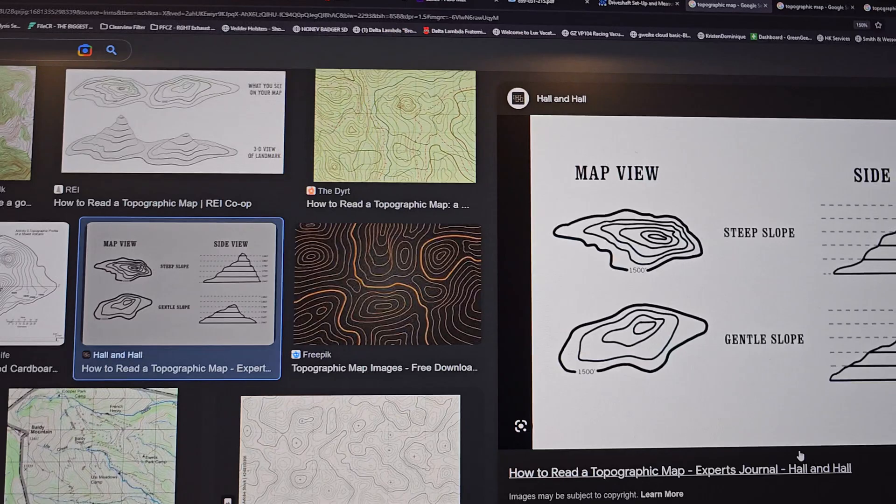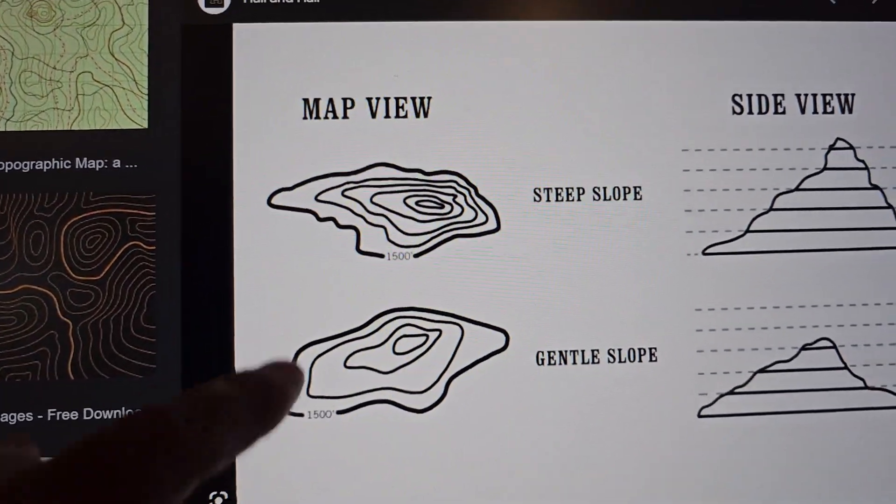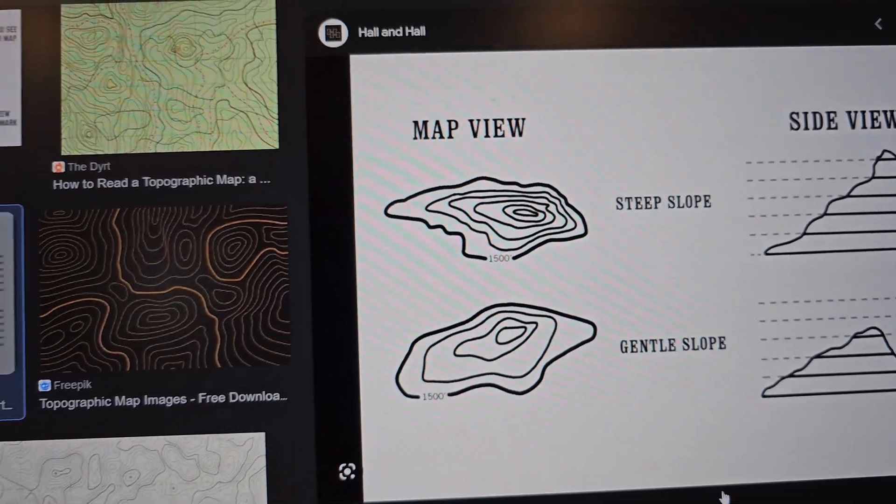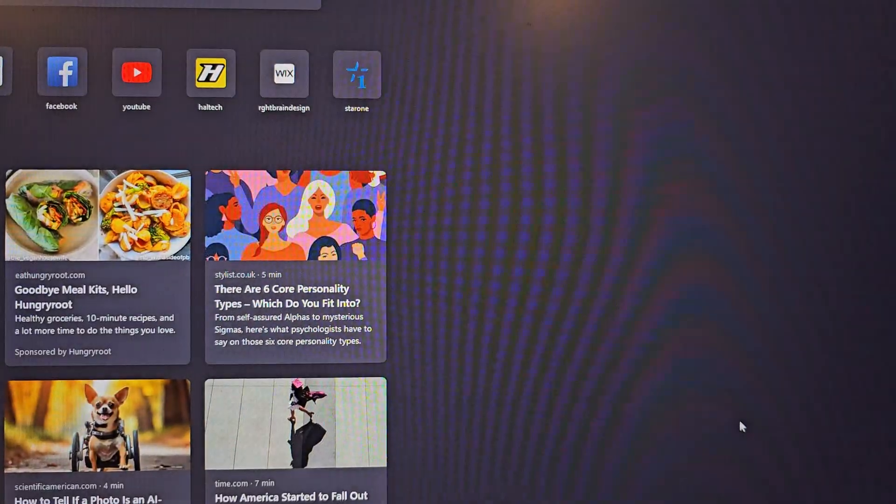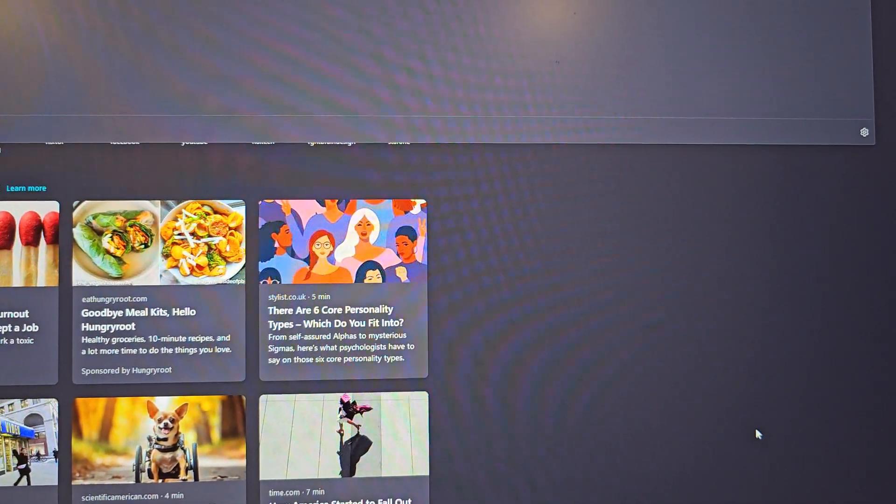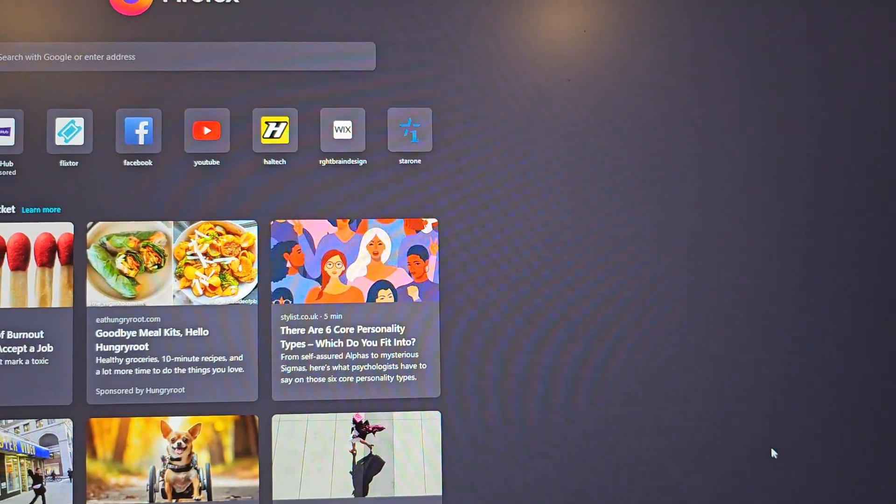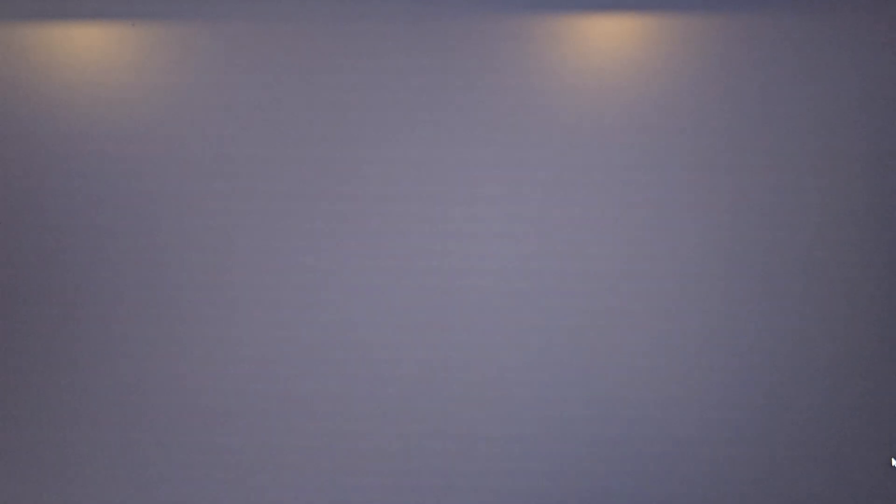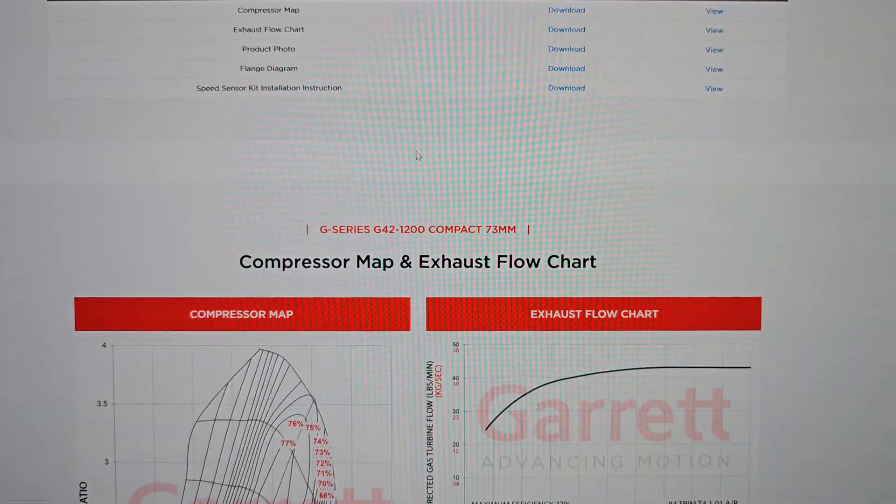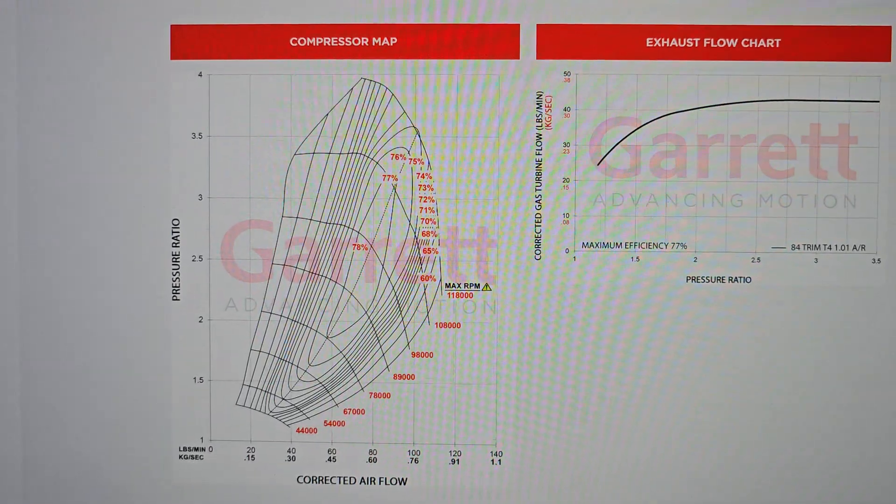When you look at a map view of a turbo, you'll see something like this, right? Let me just open a new tab real quick. We're going to go G42. There we go. Go to Garrett's site.